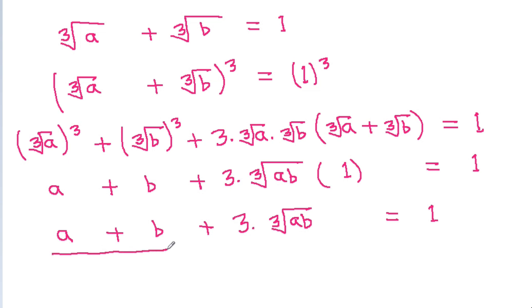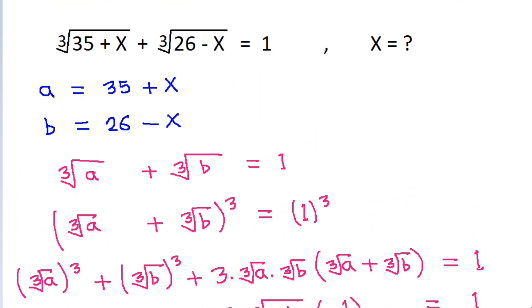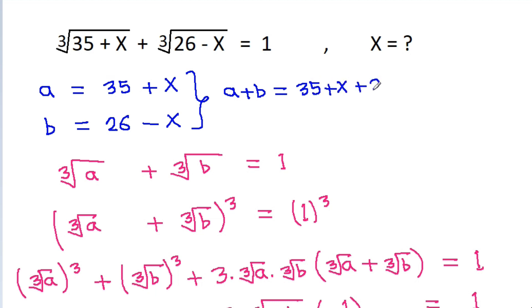And a plus b from here — we can get a plus b is equal to 35 plus x plus 26 minus x. The x terms cancel and 35 plus 26 will be 61.